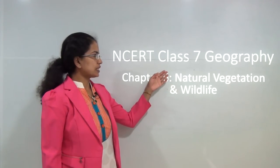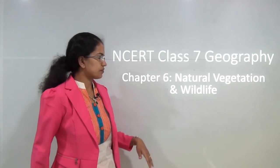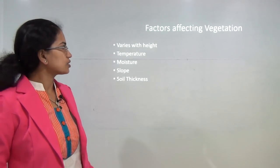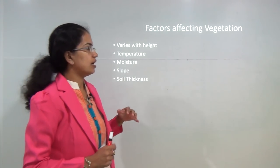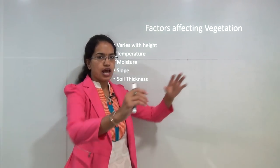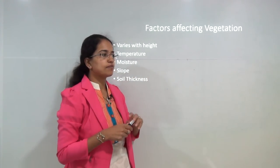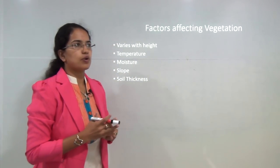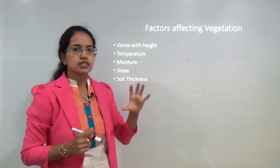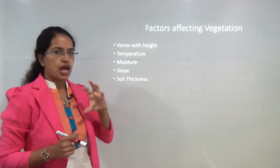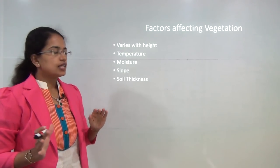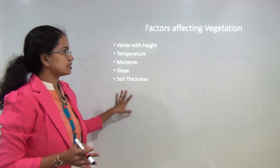Welcome. We will start with Class 7 Geography Chapter 6, that is Natural Vegetation and Wildlife. When we start with understanding vegetation and wildlife, we can classify vegetation into three broad components: forest, grasslands and shrubs. Now all these three depend on certain parameters.